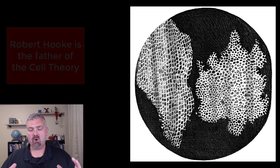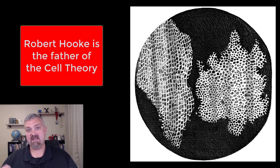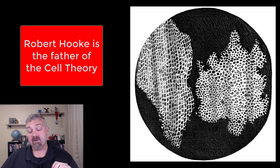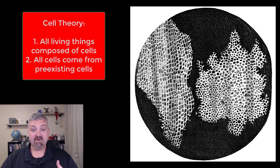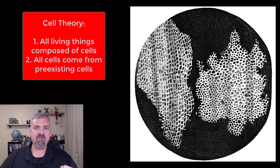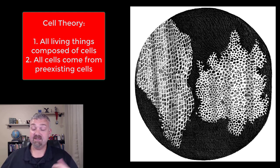Let me show you an example of what he saw — these would be some cork cells that he was looking at. He is given credit for being the father of the cell theory. The cell theory says: number one, all living things are composed of cells; and number two, all cells come from preexisting cells.